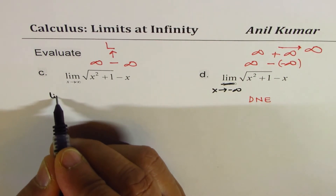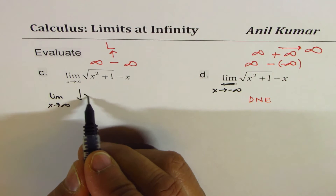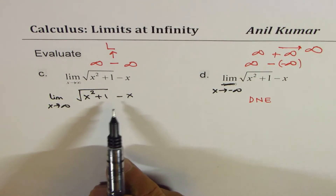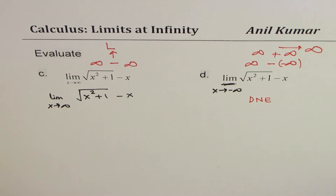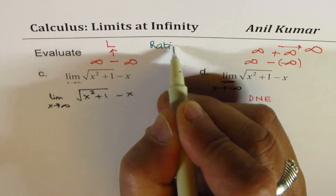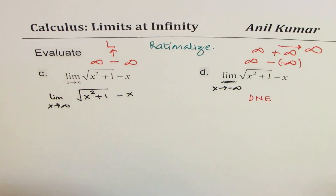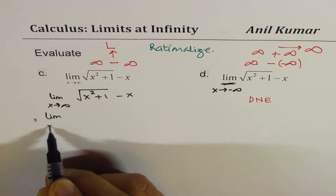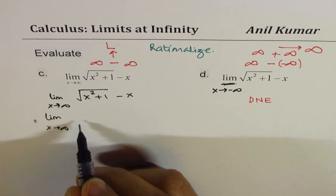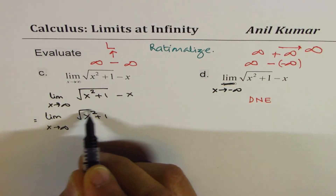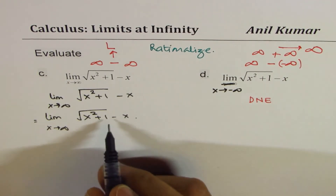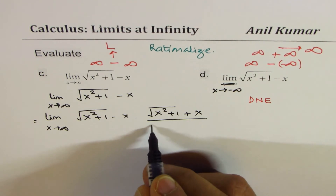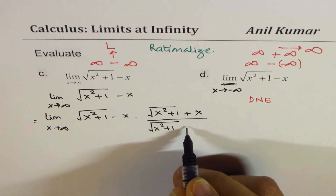For Example C, we evaluate the limit as x approaches positive infinity of square root of x squared plus 1 minus x. In such cases we need to rationalize to find the answer. To rationalize an expression with just a numerator, we multiply and divide by its conjugate — changing the sign — so we multiply and divide by square root of x squared plus 1 plus x.